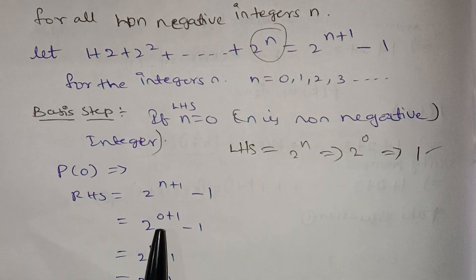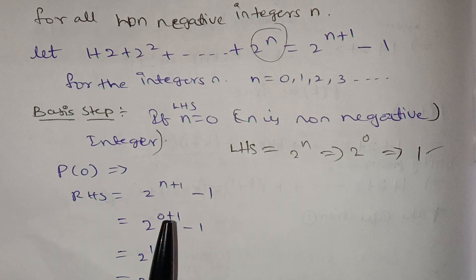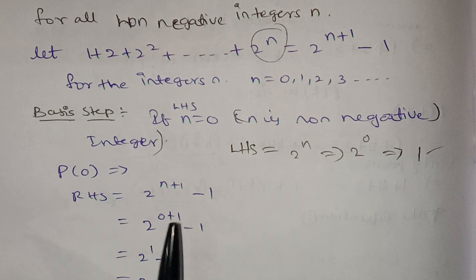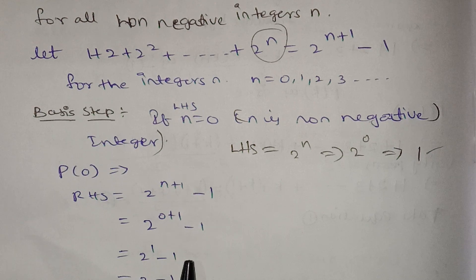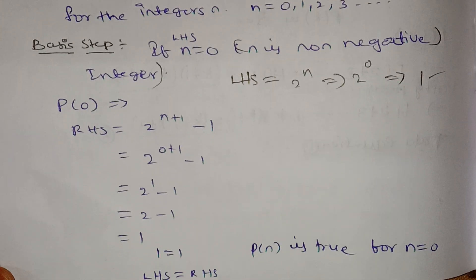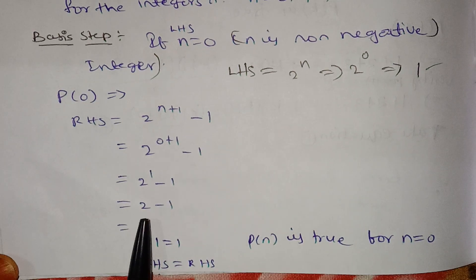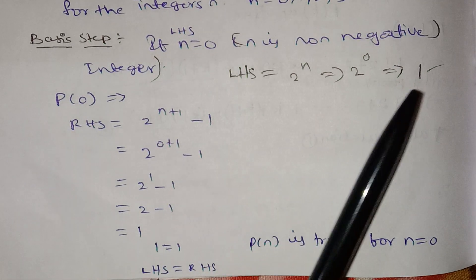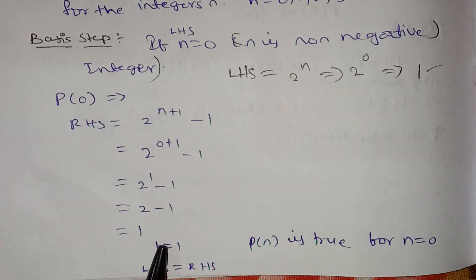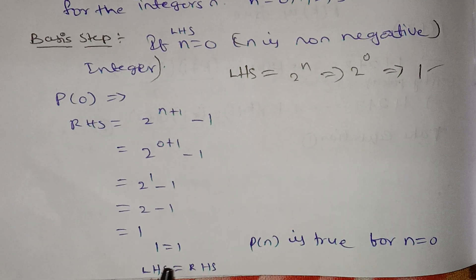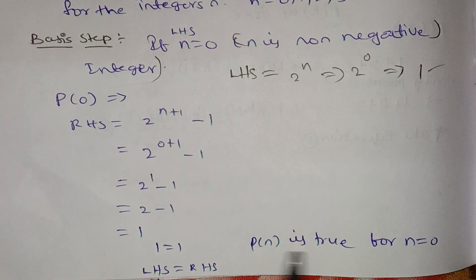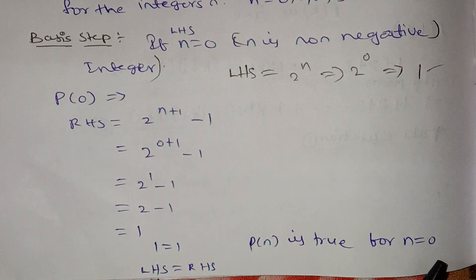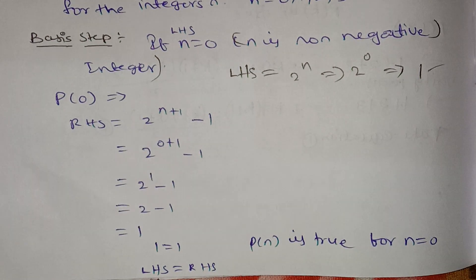RHS = 2¹ − 1 = 2 − 1 = 1. So LHS = RHS = 1. P(0) is true.